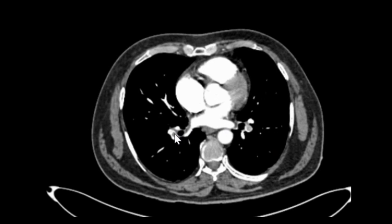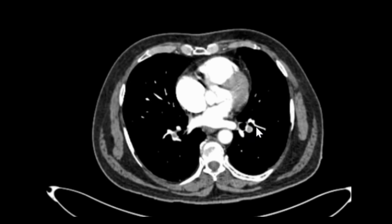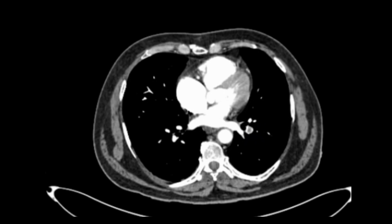Now we can see the filling defect surrounded by contrast. This is nothing but a partially filling thrombus in this vessel. We can see contrast surrounding the partially filling thrombi — it's called the polo mint sign, described for pulmonary thromboembolism on contrast CT.